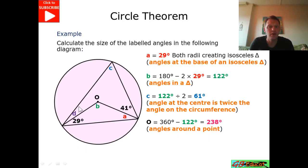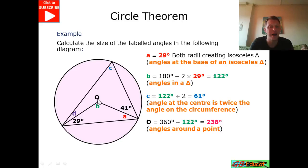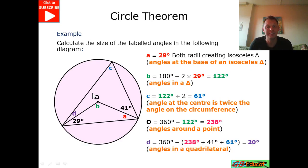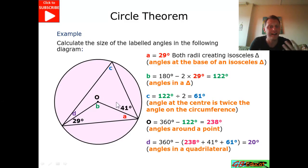For angle O, I've used the fact that angles around a point sum to 360 degrees. So 360 take away 122 leaves angle O as 238. This means I'm left with a quadrilateral shape — a four-sided shape — and all angles in a quadrilateral add up to 360 degrees. Taking away my three angles from 360 leaves angle D as 20 degrees.